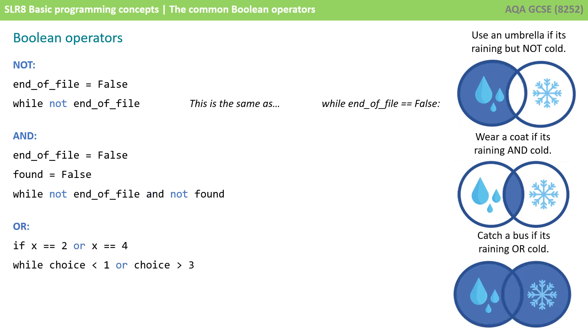The final Boolean operator is OR. With our analogy, catch a bus if it's raining OR cold. And here's a couple of examples.